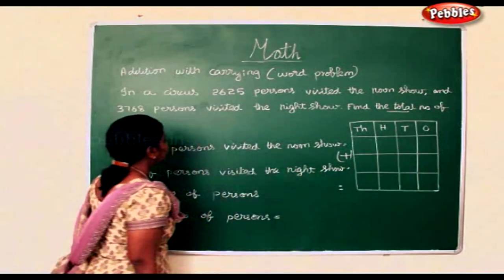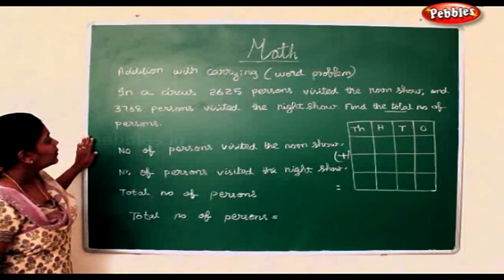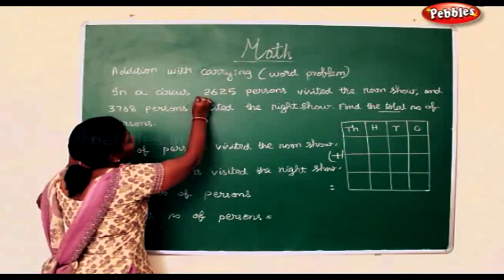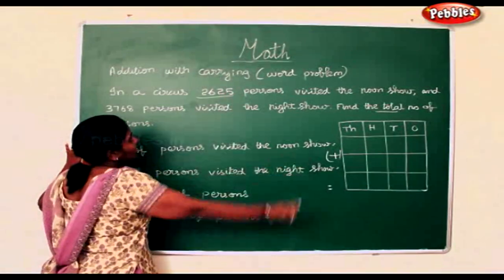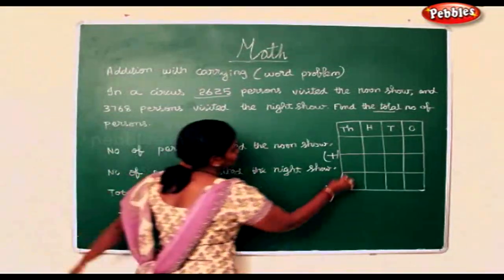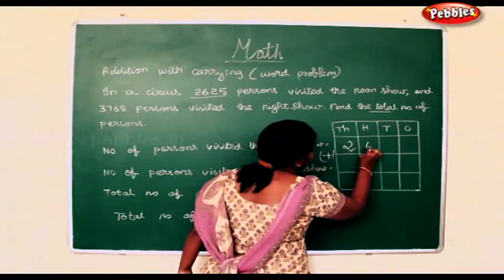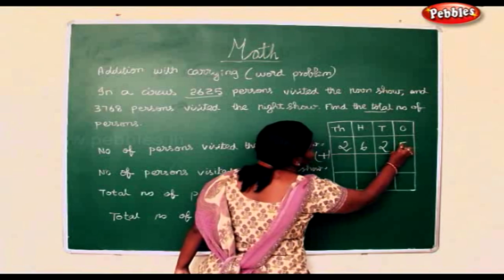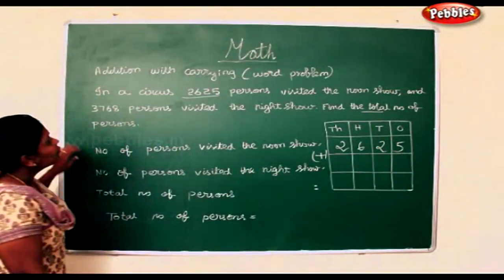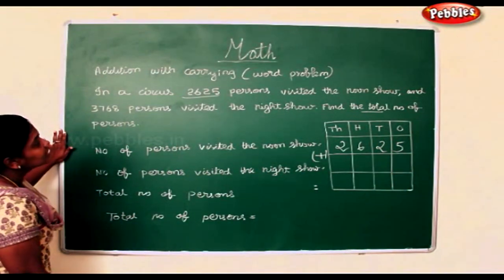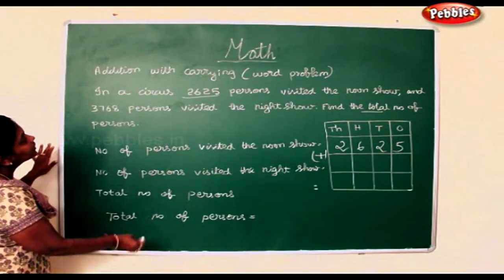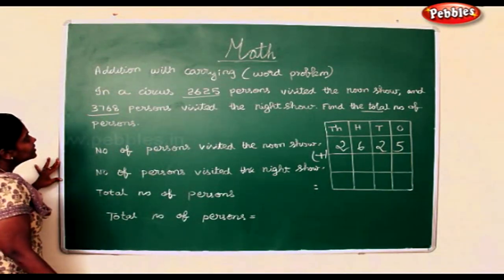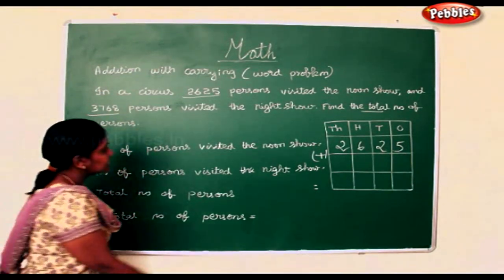We will write the symbol here. Number of persons who visited the noon show: 2,625. Number of persons who visited the night show: 3,768.